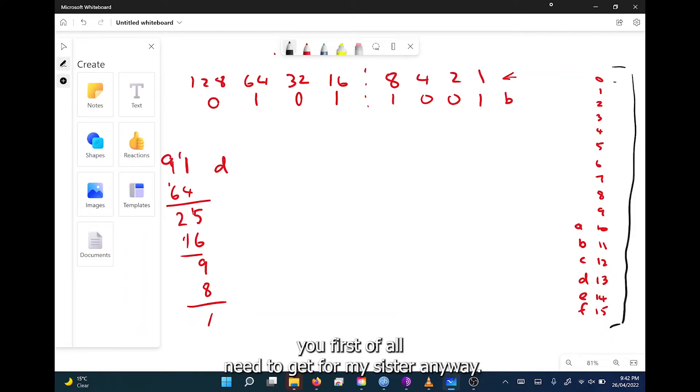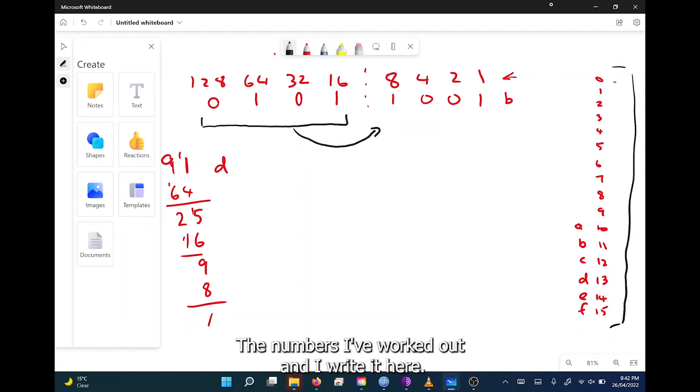So what you do is, for my system anyway, I always go to binary first, and then I take the binary number that I've worked out and write it here.